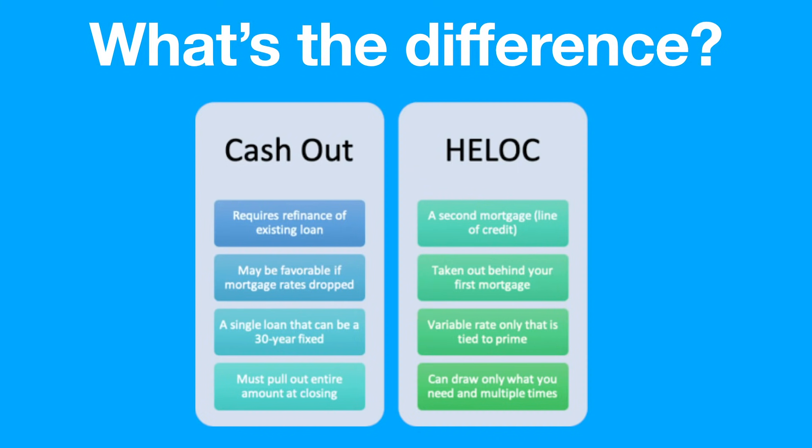Whether you buy a house with equity or you've owned a house for a while and can pull some equity out of it, you need to understand there are actually two different ways of accessing money out of that house — both are types of loans. The first is what is called a cash-out refinance. You're basically going back to the bank and saying you want to redo the entire mortgage, and this time get some cash in hand. A cash-out refinance requires you to refinance the existing loan — it may be favorable if mortgage rates have dropped, and a single loan can be up to a 30-year fixed.